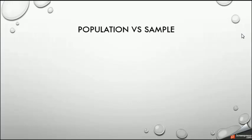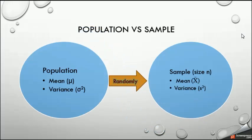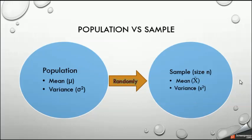Now let's look at the population and the sample. The population is our huge amount of products, people, or elements. For the population, we have two main parameters: the mean, represented by the symbol mu (μ), which is an important measure of central tendency, and the variance, which is the most important measure of variability. The population variance is called sigma squared (σ²), and the population standard deviation is called sigma (σ).